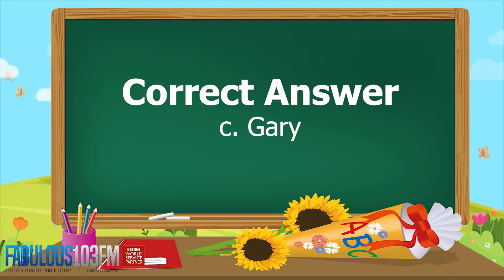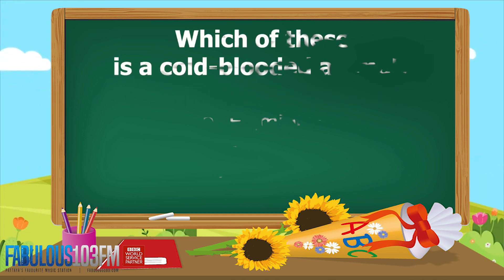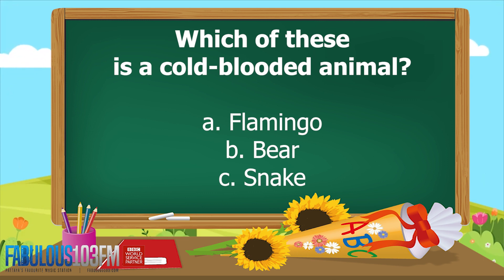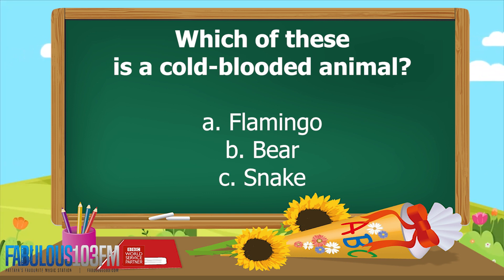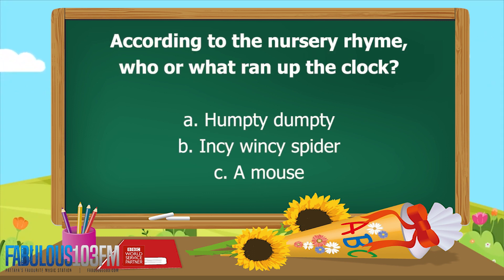SpongeBob's pet snail is called Gary. Now, new questions for today! Which of these is a cold-blooded animal? A) Flamingos, B) Bears, or C) Snakes? And the second question for today: according to the nursery rhyme, who or what ran up the clock?